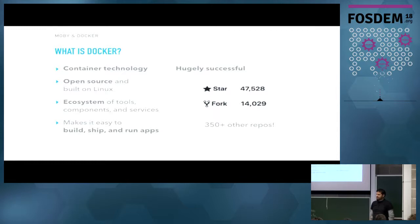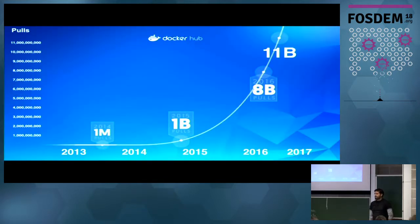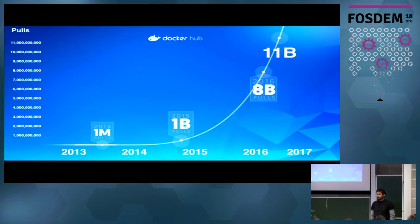Stars and forks don't really indicate anything about deployment or how much usage there is once the software is out in the world. But one of the things Docker the company provides is a registry called Docker Hub. Docker Hub gives us an idea of how quickly use of this software has spread, because when you do a Docker pull, you pull from the registry and we can tally up the number of pulls. Over the last few years we've crossed 11 billion pulls on Docker Hub — and this is an old slide from 2017, so we're way beyond this now.